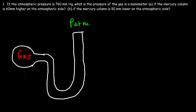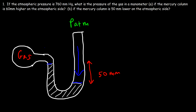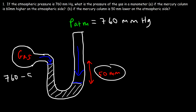We have the gas on the left side and the atmospheric pressure on the right side. This time the right side is lower than the left, so the atmospheric pressure pushes down more than the gas does. The atmospheric pressure is still 760 millimeters of mercury, and since the gas pressure is weaker and the difference is 50, it has to be 760 minus 50, which is 710 millimeters of mercury.